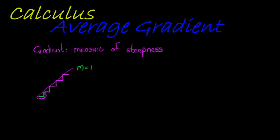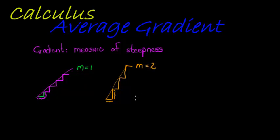Now if I were to have stairs where for every one step I go forward I go two steps up — in other words the height is double the width — and if I were to place a ladder touching the vertices of all the steps, this ladder would be steeper than the first and would have a gradient of two.